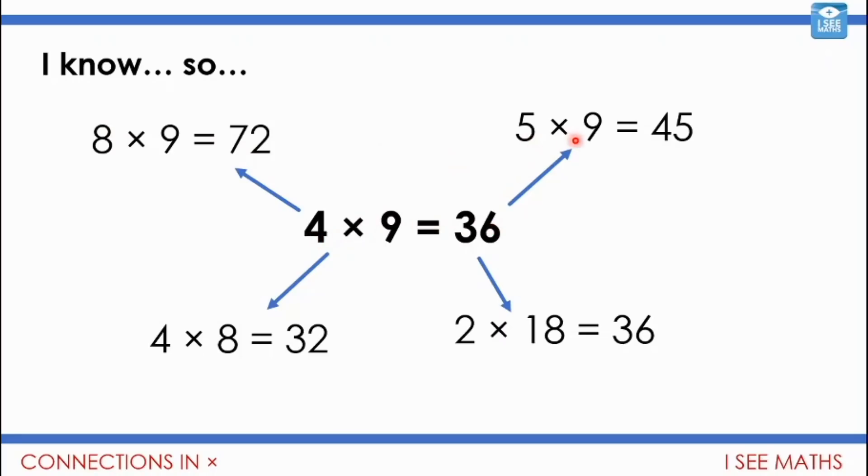Let's have a look at this one. Four nines equals 36. Five nines, well we keep, it's still lots of nine, but now I've got one extra nine. So I add nine from 36 to get to 45.